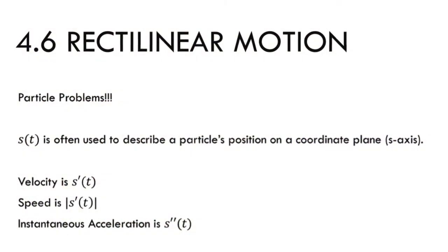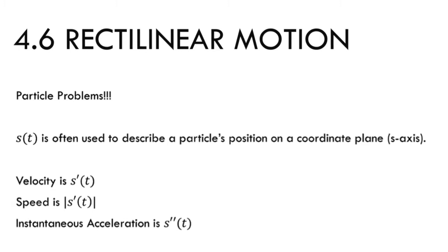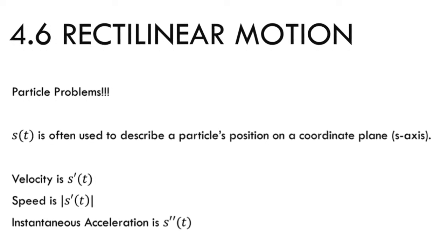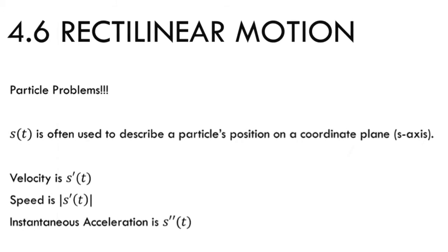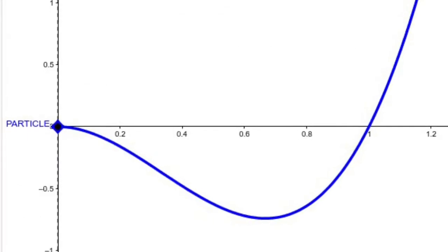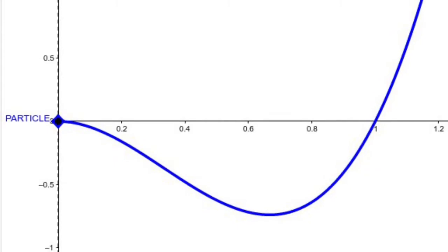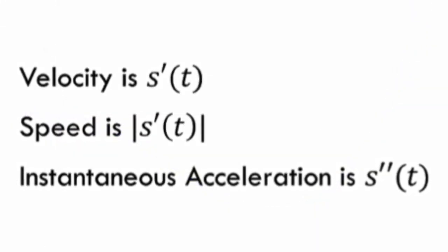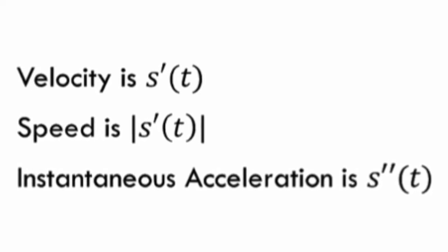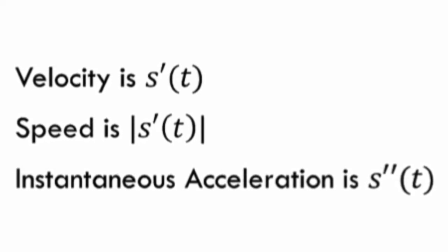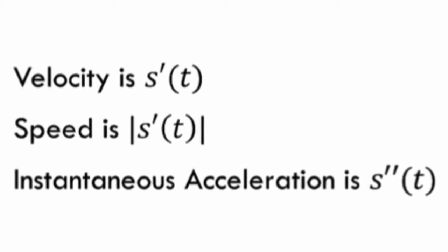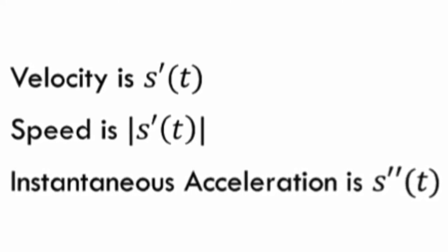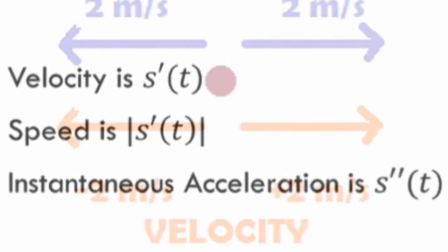In this section we're going to talk about particles moving along curves. We'll be given a function s(t) that describes a particle taking a roller coaster ride along a curve. s(t) gives us position; if I take the derivative of s(t) I get velocity; if I take the absolute value of that I get speed; if I take the second derivative I get instantaneous acceleration at a point.